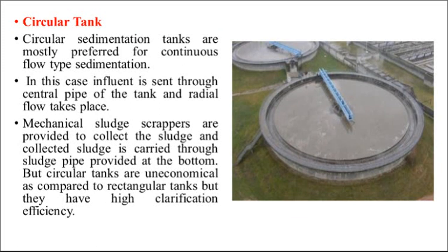The next type is the circular sedimentation tank. Circular sedimentation tanks are mostly used for continuous flow type of sedimentation. The incoming wastewater is sent through a central pipe of the tank and it flows radially. Mechanical sludge scrapers are provided to collect the sludge, and the collected sludge is carried through a sludge pipe provided at the bottom of the tank. Circular tanks are uneconomical compared to rectangular tanks, but they have higher clarification efficiency.